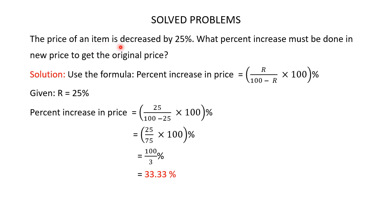Problem: The price of an item is decreased by 25 percent. What percent increase must be done in the new price to get the original price? Use the formula: percent increase = r/(100 − r) × 100. Here r = 25, so percent increase = 25/75 × 100 = 100/3 percent, which is 33.33 percent. So the percent increase in price required is 33.33 percent.